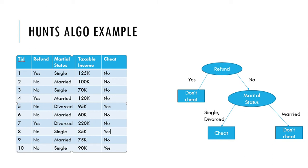In the last video we have seen the dataset and understood what we are going to try to build. Now in this video we are going to understand how a decision tree is made, how it is built, how the columns are chosen. So let us first get our goal — what we are trying to solve here: we want to build a decision tree.